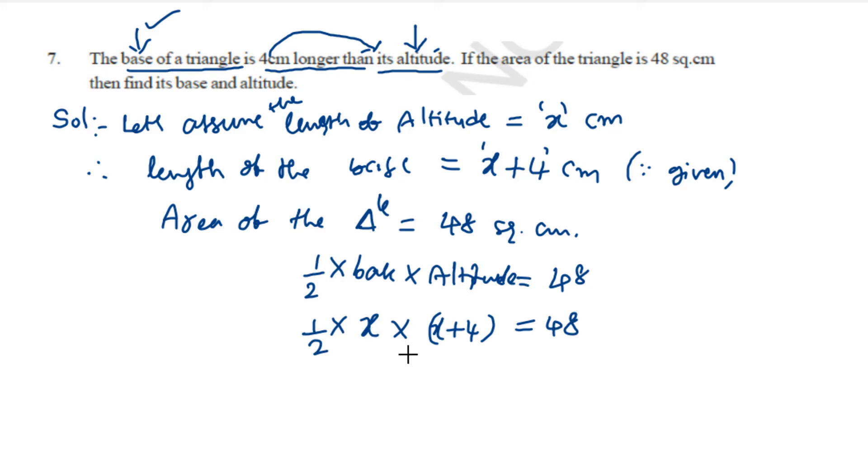Now, to make it simple, let us transpose this 2 to right hand side. So we get x into x plus 4 equals to 48 into 2.